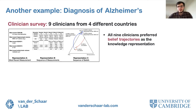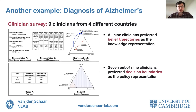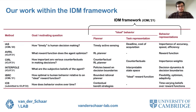We evaluated INTERPOL by consulting nine clinicians from four different countries for feedback, and all nine clinicians preferred the belief trajectories produced by INTERPOL over alternative ways of representing how information is accumulated. Moreover, seven out of these nine clinicians preferred the policy representation in terms of decision boundaries over an alternative representation based on rewards, which is much more common in decision making analysis.